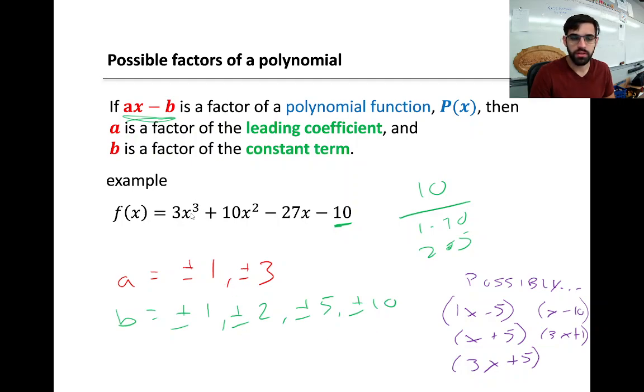It's a degree of 3, so I know we're dealing with 3 factors. But all the possible factors that could possibly work for this thing would be something like positive x minus 5, or positive x plus 5, or 3x plus 5, or positive x minus 10, or positive 3x plus 1, or any combination of those a's and b's.